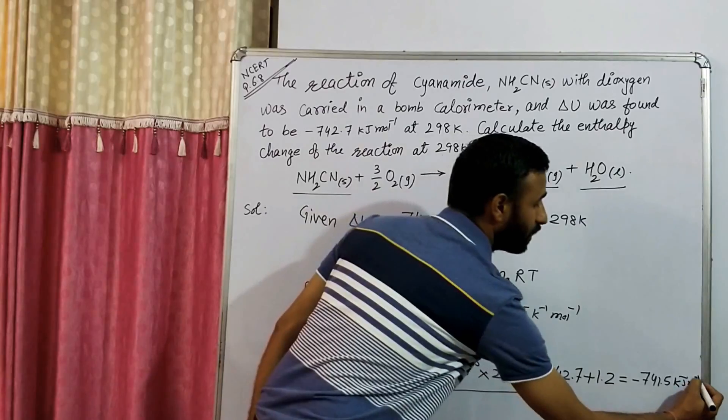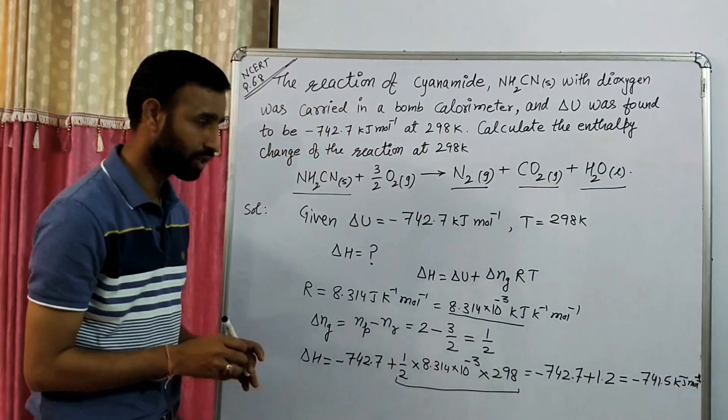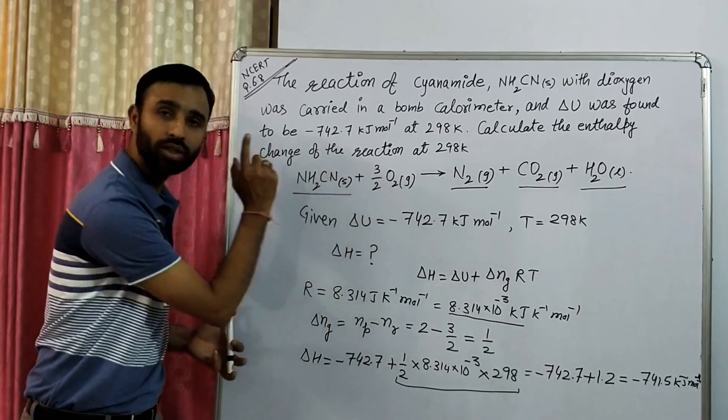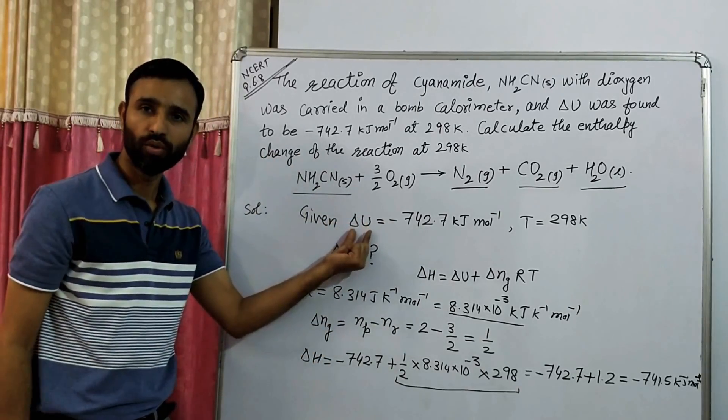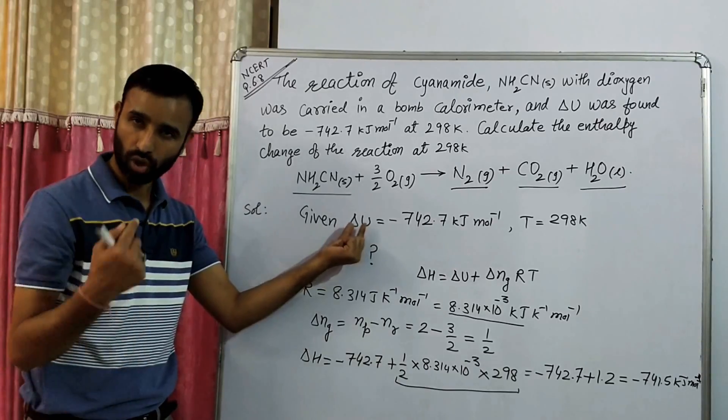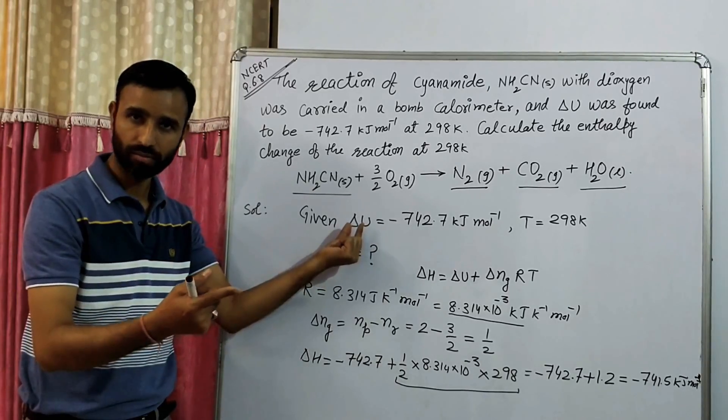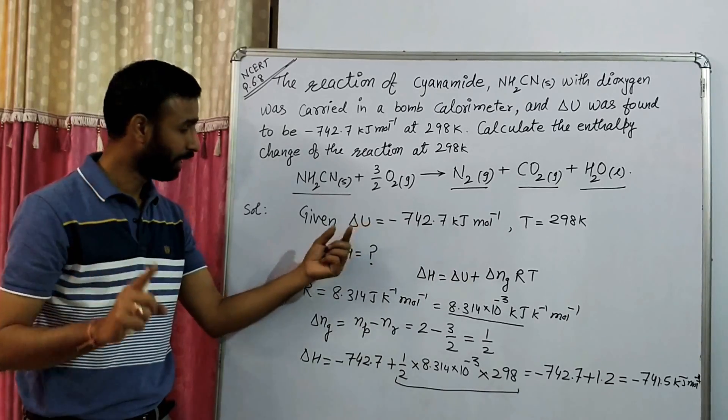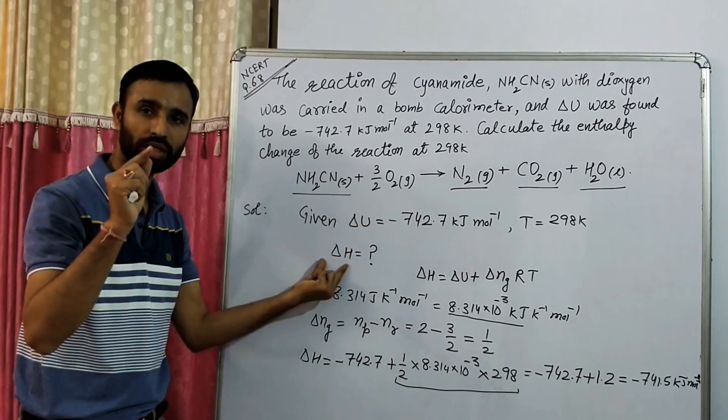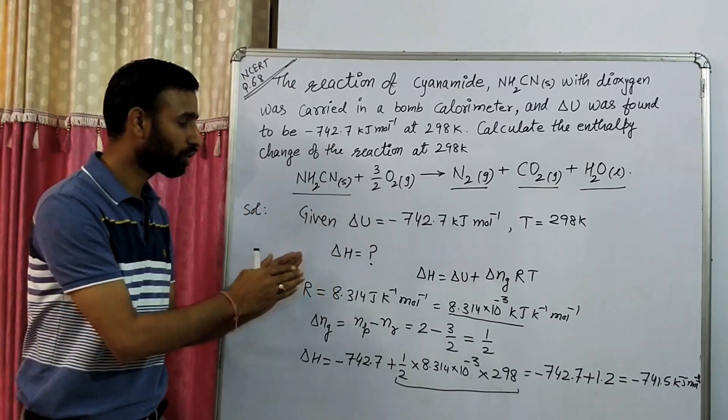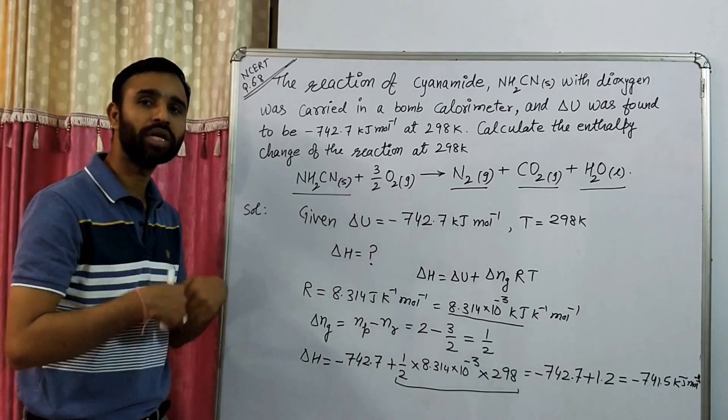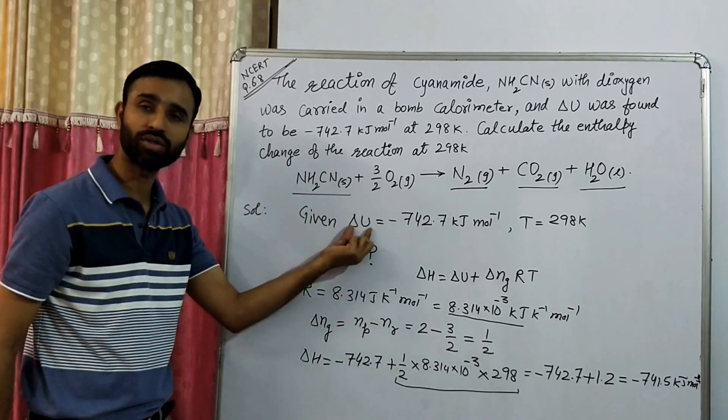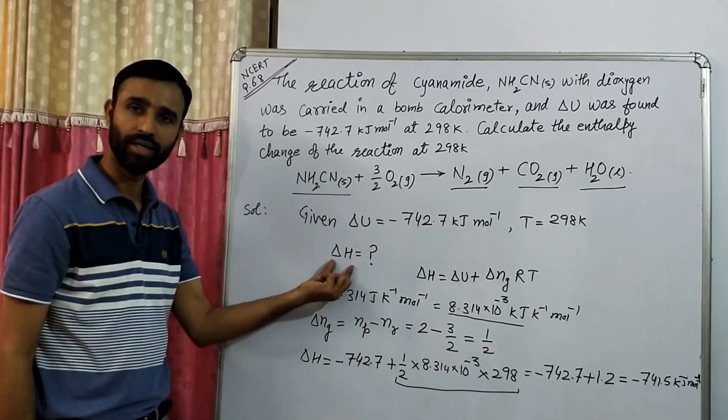So in this way, we calculate delta H. These are the two things: delta H and delta U. What is delta U? Amount of energy absorbed or released by the system at constant volume. And what is delta H? It is the amount of energy absorbed or released at constant pressure. So keep in mind, this is at constant volume, this is at constant pressure.